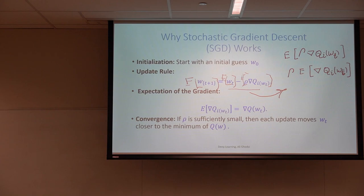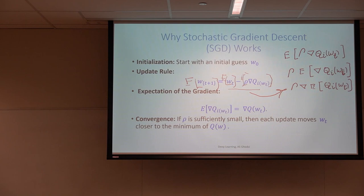The expectation is a sum: sum from i equal to 1 to n divided by n. So the expectation of the gradient is basically the gradient of the expectation. And the expectation of qi is again just a sum — sum i equal to 1 to n of qi.